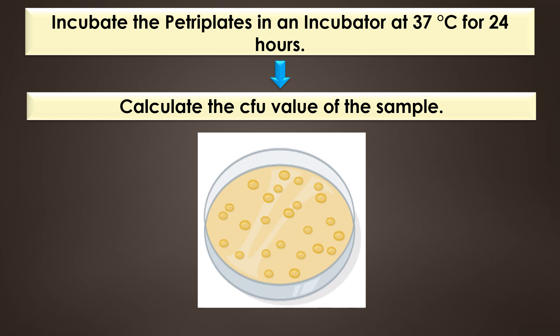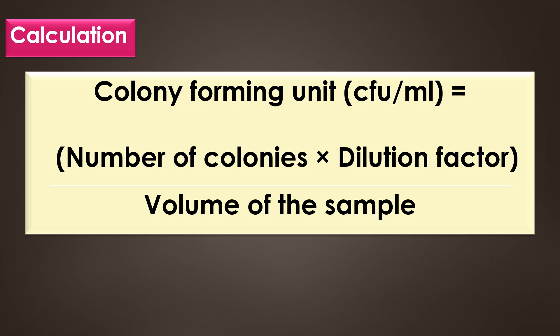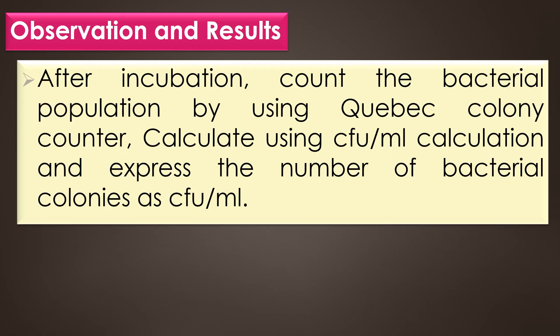Finally, calculate the CFU — colony forming unit — value of the sample. The formula for calculating CFU per ml is: number of colonies multiplied by the dilution factor, divided by the volume of the sample. The dilution factor is the reciprocal of the dilution; for example, if the dilution is 10⁻¹, the dilution factor is 10¹.